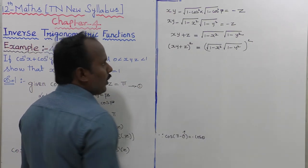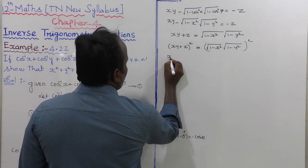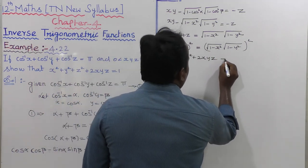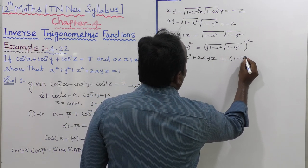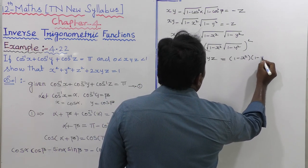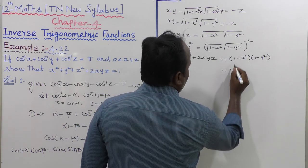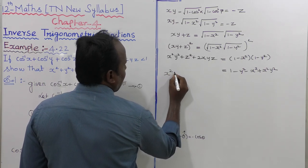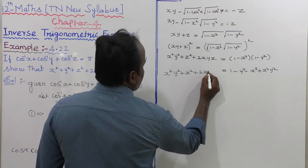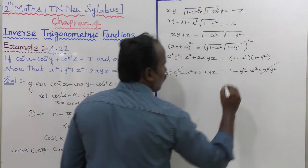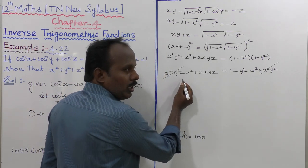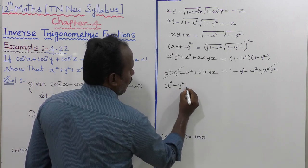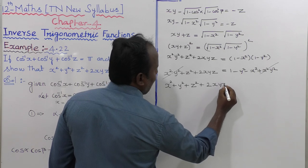Expanding using (a + b)² = a² + b² + 2ab: left side gives x²y² + z² + 2xyz. The right side expands as (1 − x²)(1 − y²) = 1 − y² − x² + x²y². The x²y² terms cancel on both sides, and moving −x² and −y² to the left gives x² + y² + z² + 2xyz = 1. Hence the proof is complete.